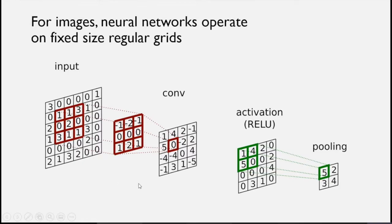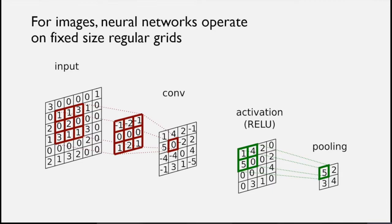This is a simple demonstration of how convolutional neural networks operate on fixed-sized regular grids. You always have these kernels — very well defined, their sizes, how to apply them to the image. You have these convolutions, activations, and pooling, all very well defined using the grid structure of the image. So it is not very straightforward to apply these operations or building blocks of neural networks onto point clouds.